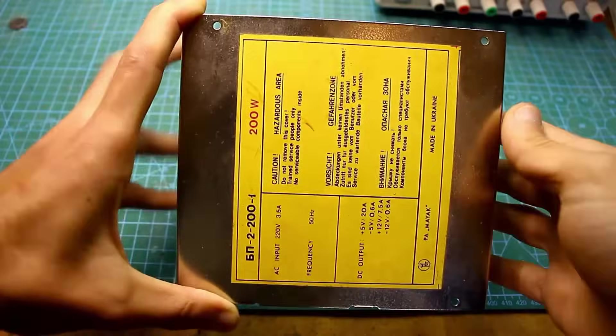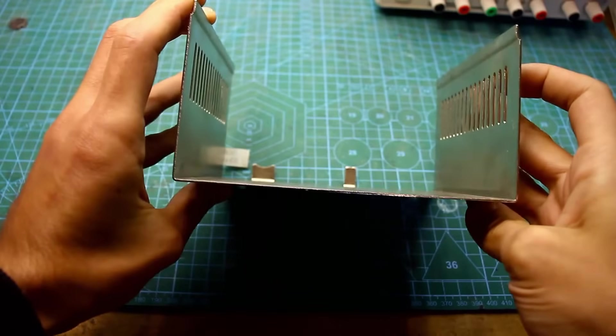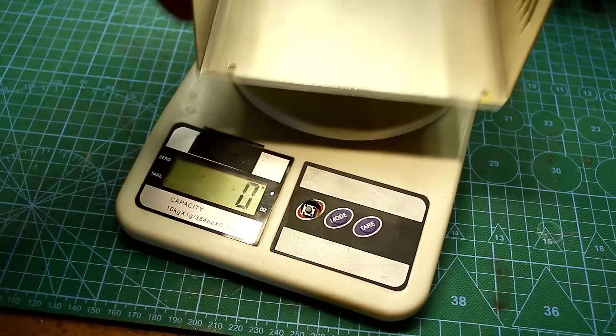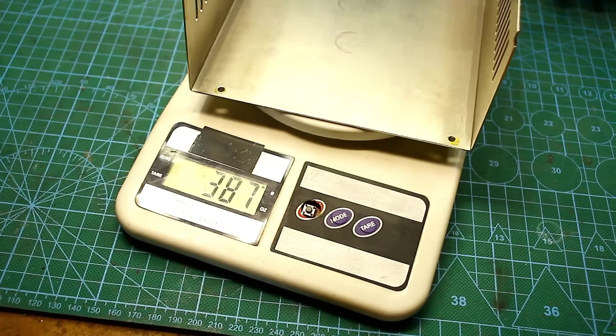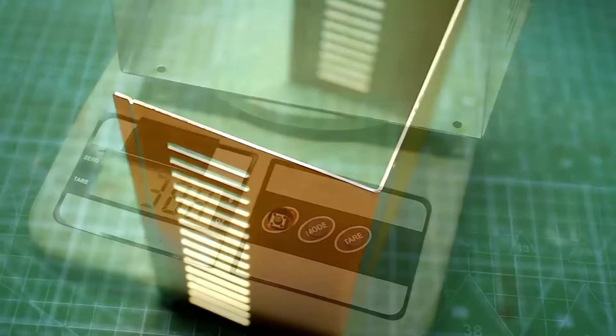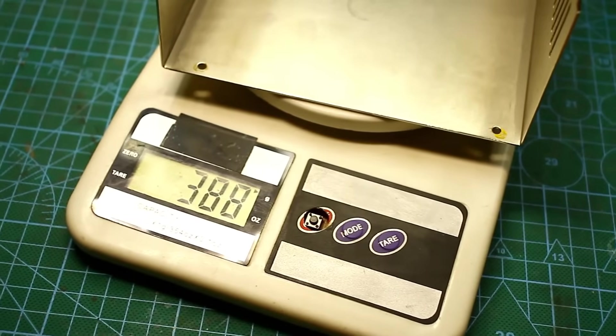First of all, I would like to point out that the power supply case is made of sheet metal, with a thickness of 1.2 millimeters. The lid alone weighs almost 400 grams. It's immediately clear that they didn't try to cut costs on the construction, but instead made it as high quality and reliable as possible, unlike many modern ones.